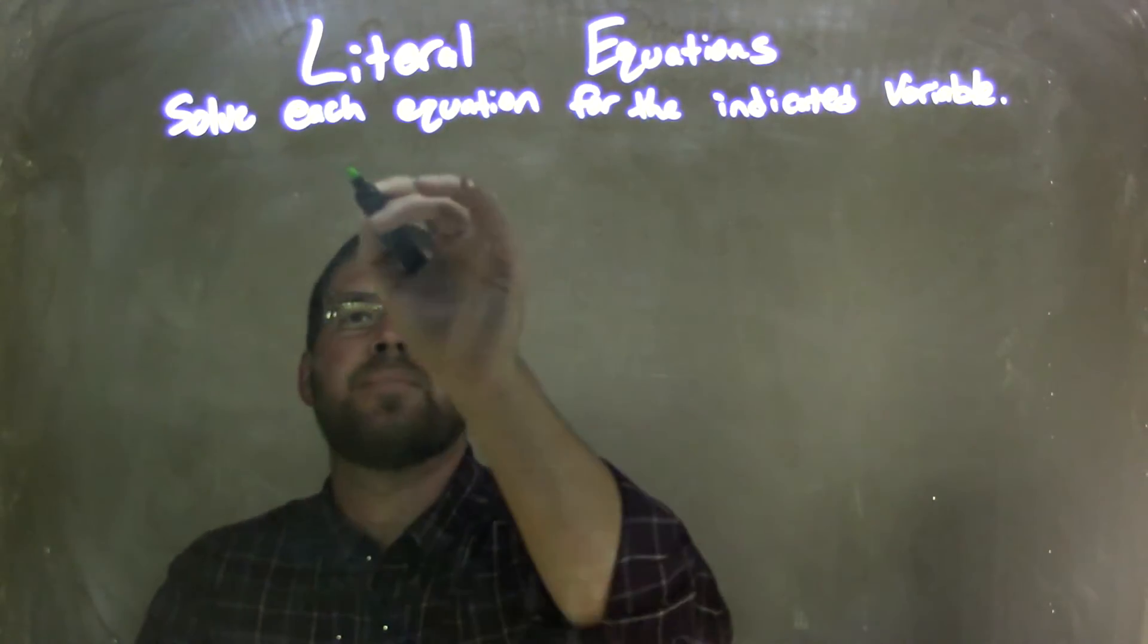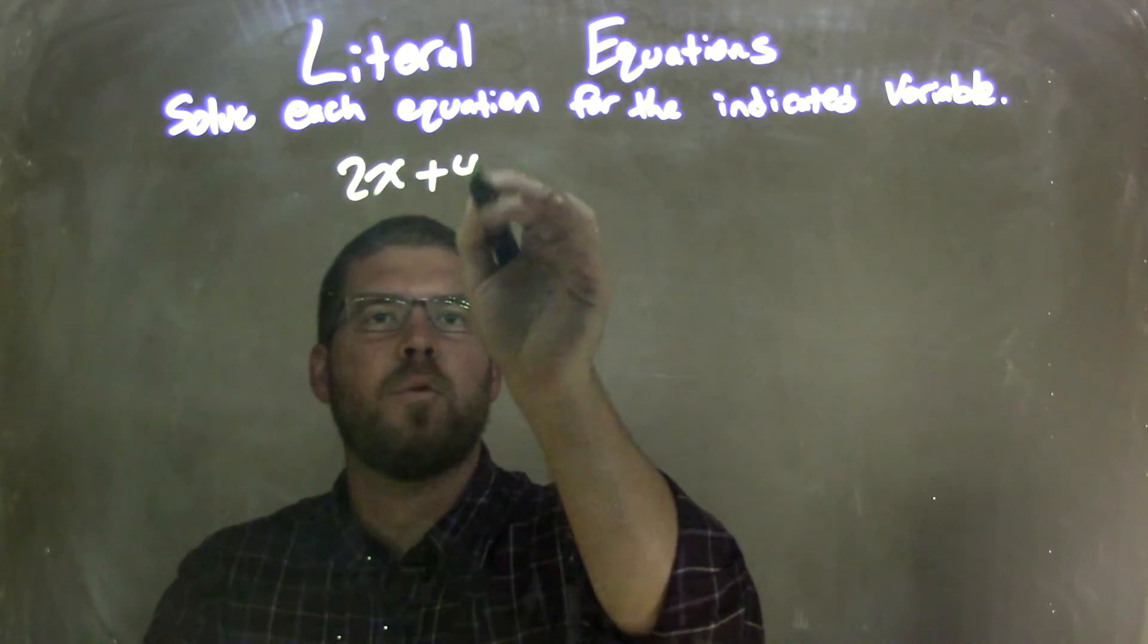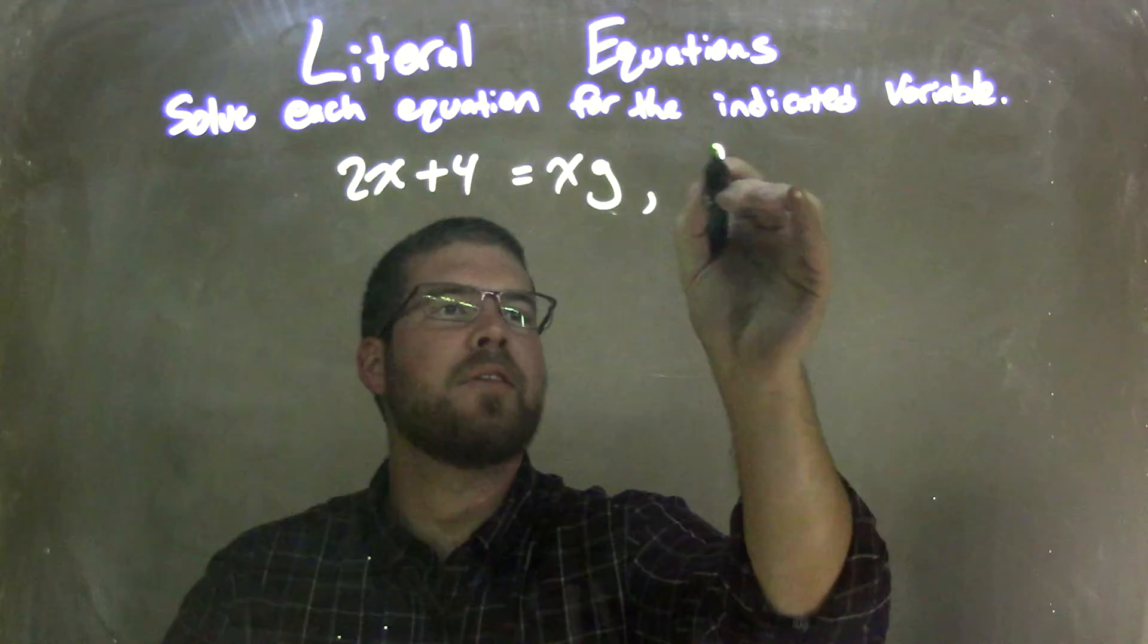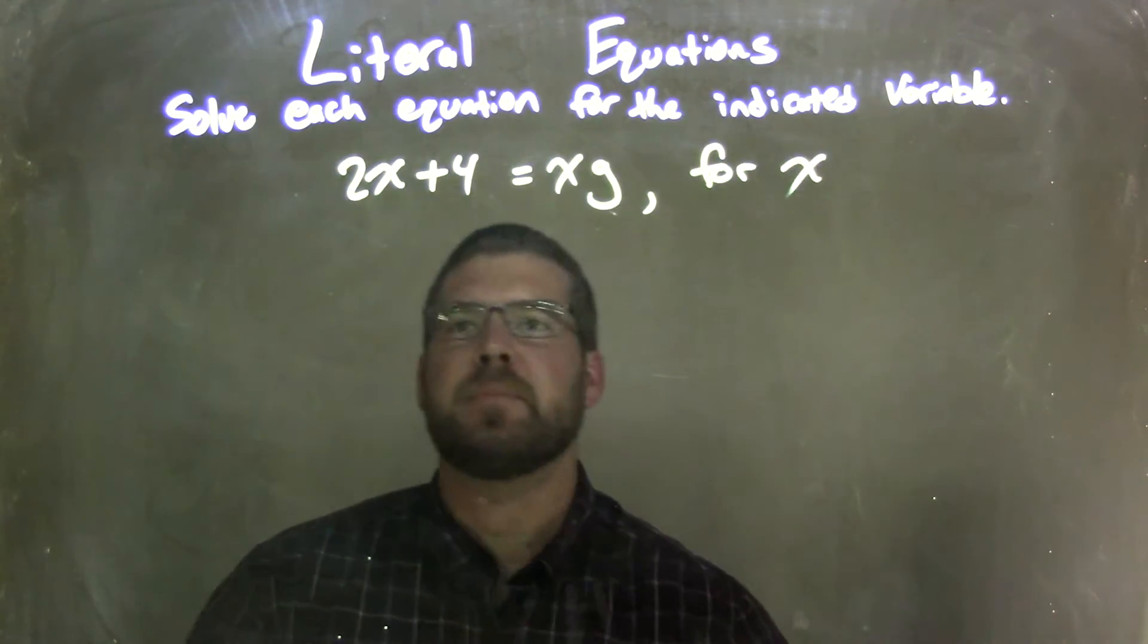So if I was given this problem, 2x plus 4 equals x times g, and we're solving that for x.